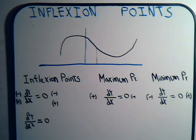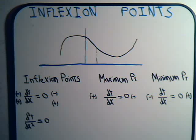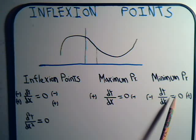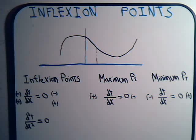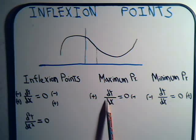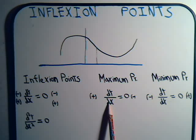We talked a little bit about inflection points in a past video, and everything we said was correct, but there was more to be said about that subject. But first, let's briefly talk about maximum and minimum points. We pointed out that when you have a local maximum point and you arrive at that point, the first derivative or the instantaneous slope will be zero at that point.